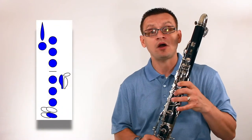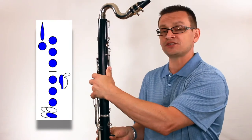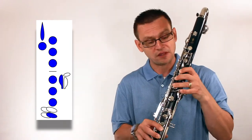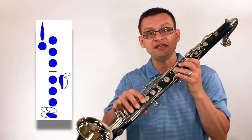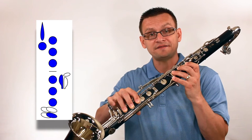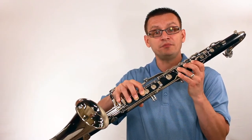Then we'll need our two pinky B natural fingering, the one that employs the register key and our thumb in the back, three fingers on top and bottom, and then these two pinky keys here with our left hand and here with our right hand. That is our top note B natural.